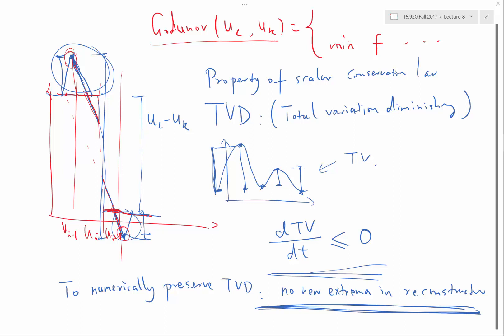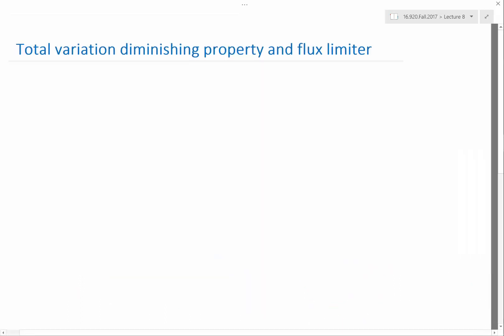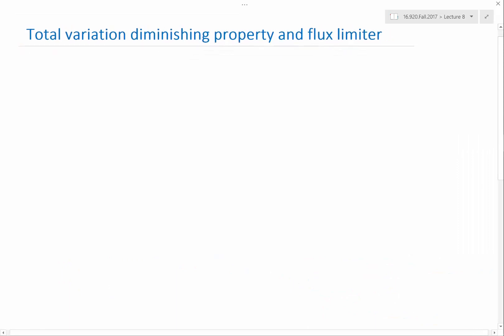So in other words, all the schemes that are second-order and TVD are complex. And the definition of complex is that it has to be non-linear even for a linear equation. So that's called the Godunov's Order Barrier Theorem.